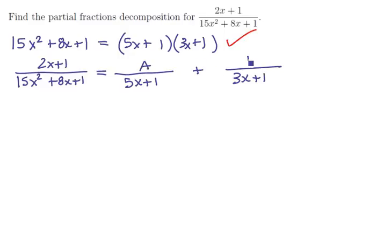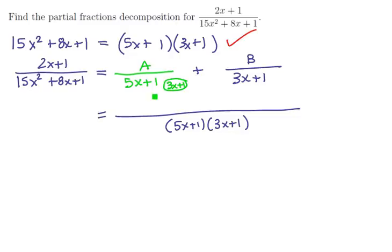All we need to do is work out the two unknown numerators. Let's put our decomposed side back together on the common denominator (5x+1)(3x+1). The first term needs 3x+1 multiplied top and bottom, contributing A(3x+1). The second term needs 5x+1 multiplied top and bottom, contributing B(5x+1).